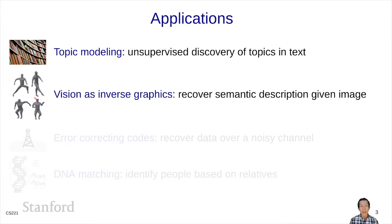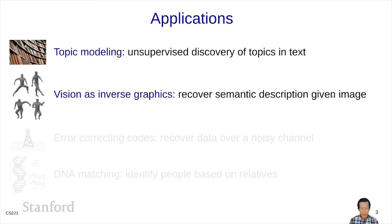Another interesting example is vision as inverse graphics. Much of computer vision today takes images and processes them to generate semantic descriptions, such as object categories or scene descriptions. Vision as inverse graphics takes a very different approach: we specify, using laws of physics, a graphics engine that can generate an image given some semantic description—for example, a 3D model of an object. Computer vision then becomes just inverse graphics, where we recover the semantic description using the image as input. This is an example of inference on a generative model. While this idea hasn't been able to scale past limited examples, it's a very tantalizing idea nonetheless.